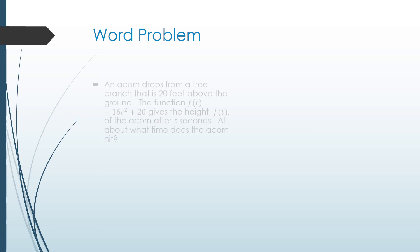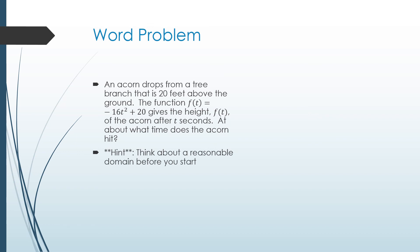Let's take a look at a word problem example. An acorn drops from a tree branch that is 20 feet above the ground. The function f of t equals negative 16t squared plus 20 gives the height f of t of the acorn after t seconds. At about what time does the acorn hit? The key word in that word problem is the word about. It means we're not looking for an exact answer. Pause the video at this point to give yourself a chance to try it on your own. Before you start, you should have thought about a reasonable domain. Thinking about the fact that my domain has to deal with time, it makes no sense whatsoever for me to have negative time. The reasonable domain then would be to start at zero.